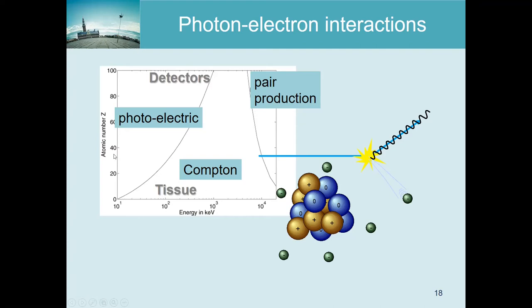If we have very heavy atoms like lead, gold, or uranium, the dominating interaction is the photoelectric effect. But that also depends on energy - if the energy is high enough, even in pretty heavy materials the dominating interaction can still be Compton.